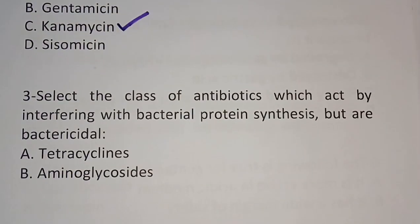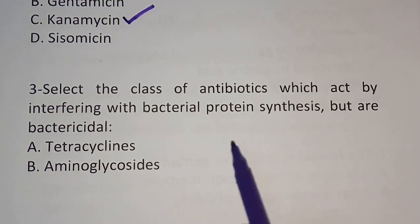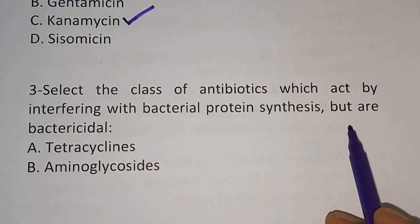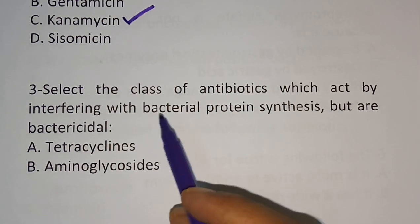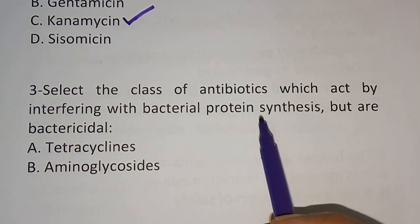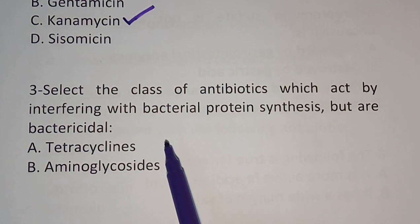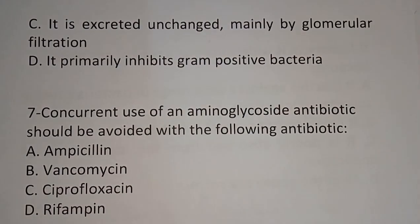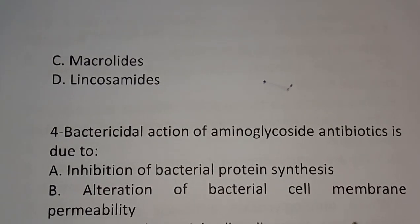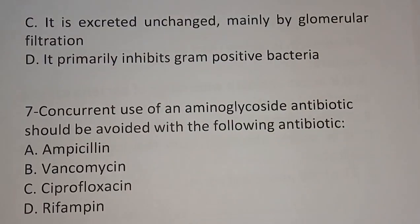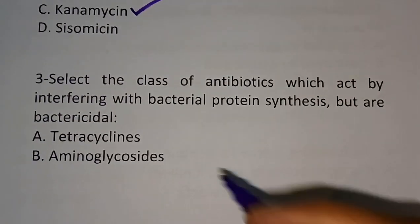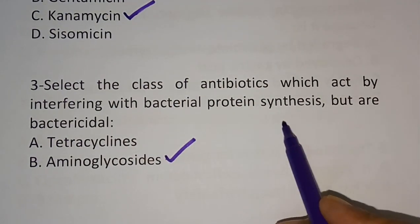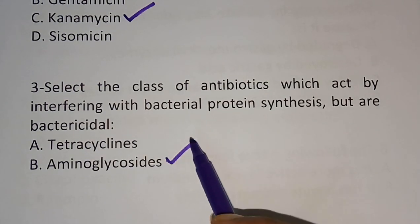Question 3: Select the class of antibiotics which act by interfering with bacterial protein synthesis but are bactericidal. Option A: Tetracycline. Option B: Aminoglycoside. Option C: Macrolide. Option D: Lincosamide. The correct answer is Option B, Aminoglycoside. Aminoglycosides are antibiotics that act by interfering with bacterial protein synthesis but are bactericidal.